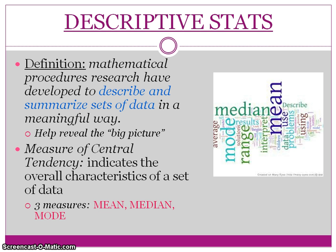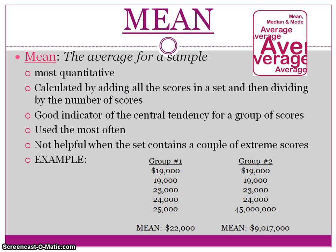There are two types of descriptive statistics. The first is measure of central tendency — and these are the ones you know: mean, median, and mode. We'll briefly go over this and practice in class. Mean is the average for a sample. You calculate it by adding up all the scores in your data set and then dividing by the total number of scores. This is a good indicator for central tendency and is the most commonly used.